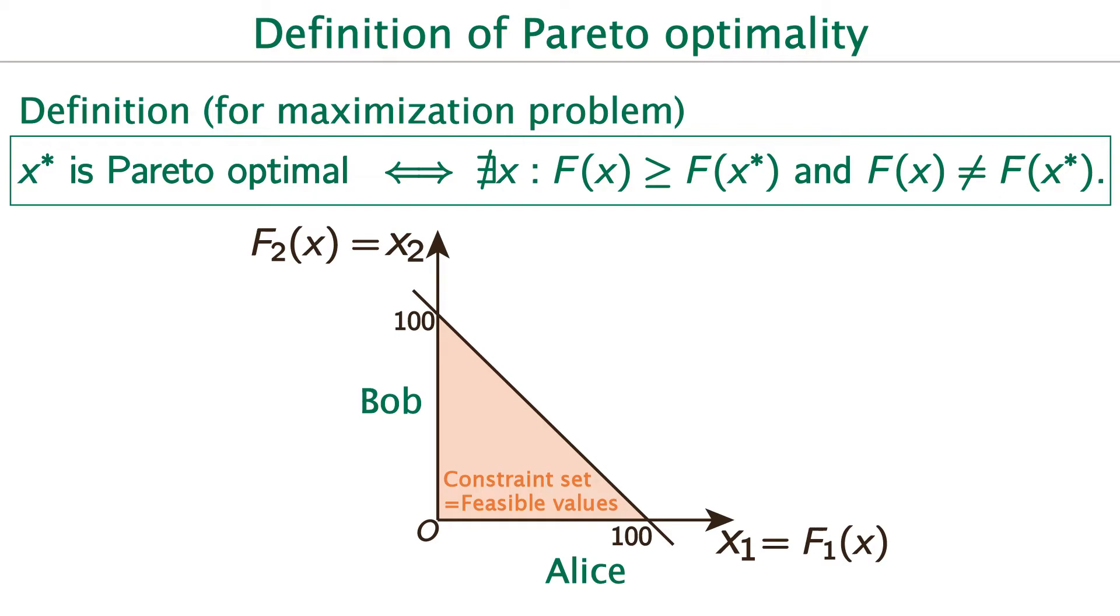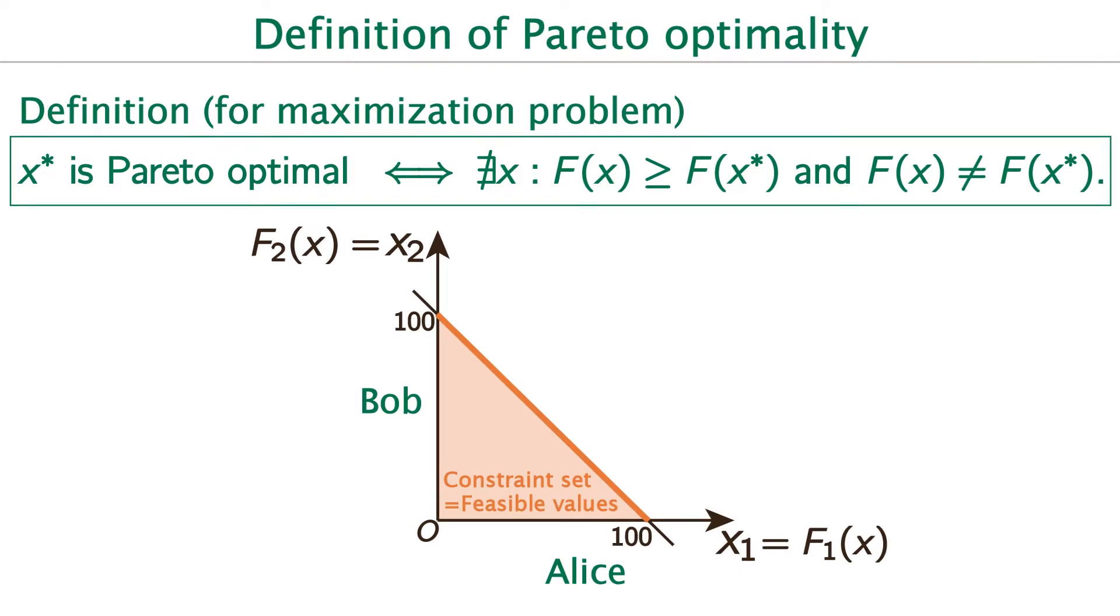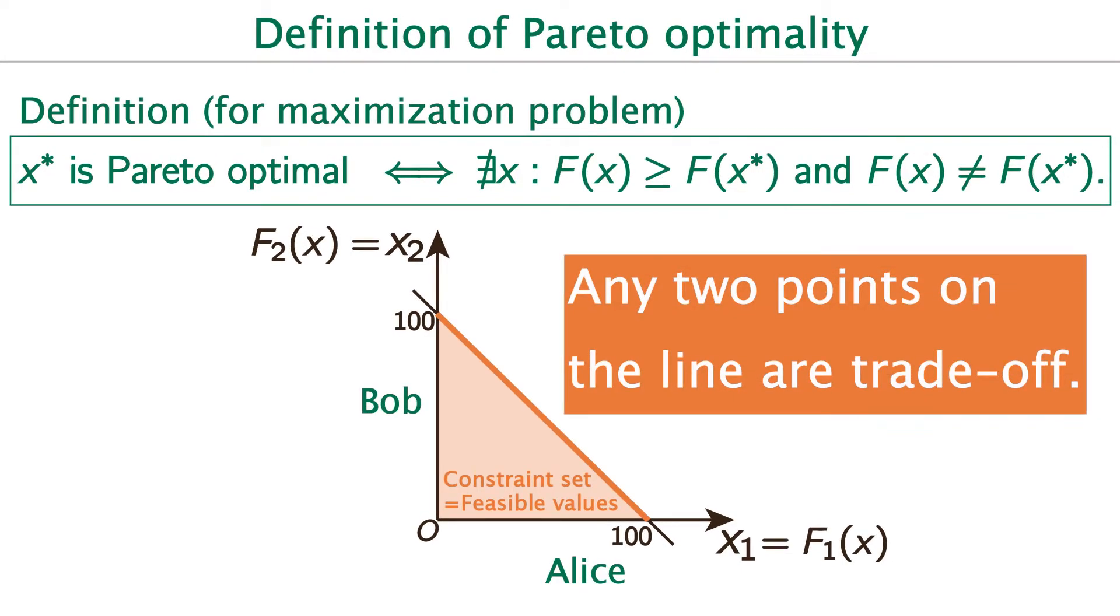Then, which points are Pareto optimal in the previous example? In this graph, the points on this orange line are Pareto optimal. Just think for a moment, and you'll find that any two points on the orange line are trade-off. So, the points on the orange line satisfy the definition of Pareto optimality. Anyway, multi-objective optimization problem is intended to get Pareto optimal solutions.